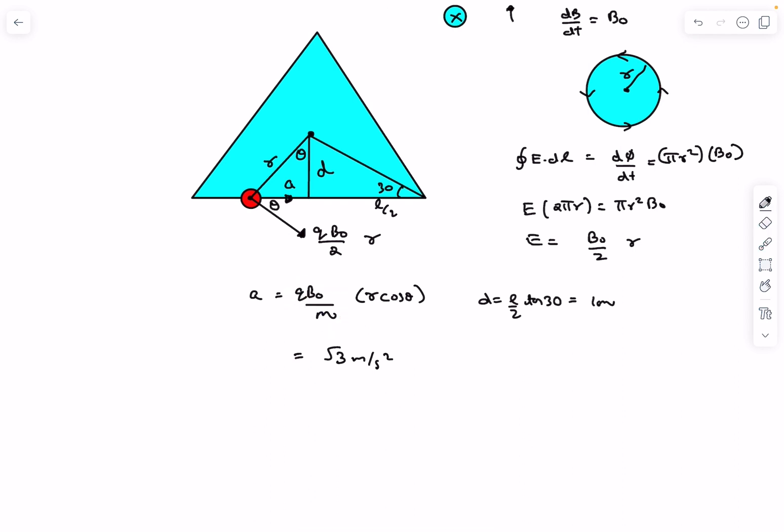So after substituting all the values, the value of qB0/m is given. This r is a mistake. The qB0/m is √3. r cos θ is d which is 1 meter. So the acceleration comes out to be simply √3 meters per second squared.